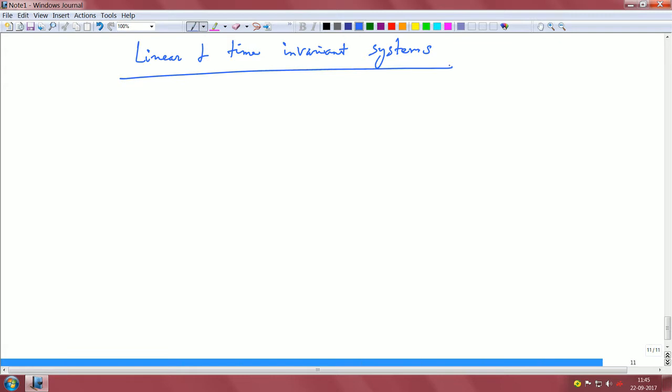We saw what linearity was—that means it should satisfy the property of superposition. And we saw what time invariance was—that means if you delay the input by some n naught time steps, the output is also delayed by the same time steps.